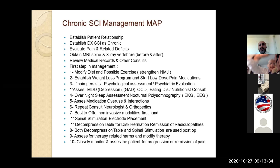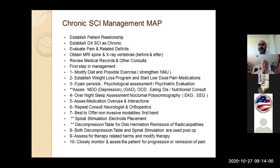As a future neurology resident, I will establish a patient relationship, establish diagnosis of a spinal cord injury as chronic, and evaluate pain and related deficits. We will obtain MRI of the spine, x-ray vertebrae, and review medical records from other doctors and consultations. The first step in management I am offering is a modified diet and possible exercises to strengthen the neuromuscular junction to support back pain and various difficulties that people with a spinal cord injury experience.